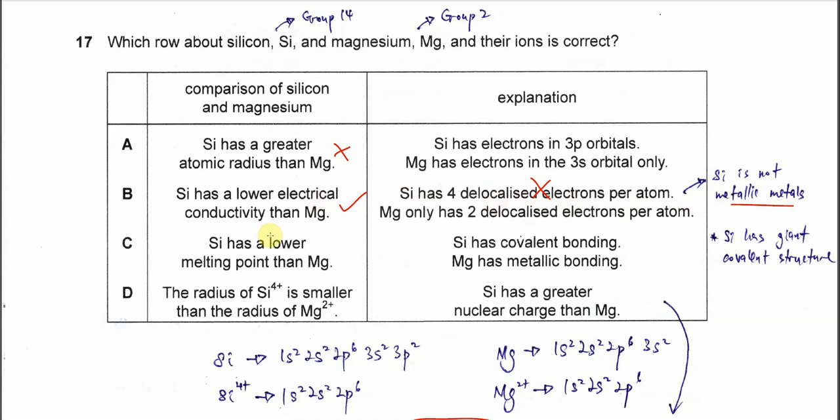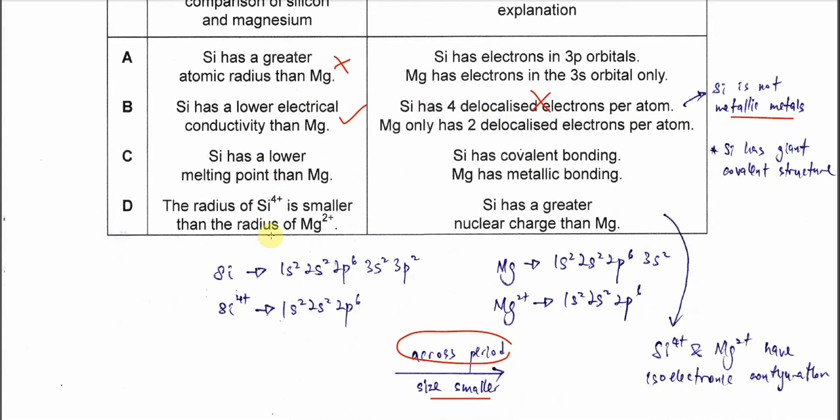C. Silicon has a lower melting point than magnesium. This is wrong. Silicon actually has the highest melting point compared to others because silicon has a giant covalent structure, or we can say giant molecular structure.